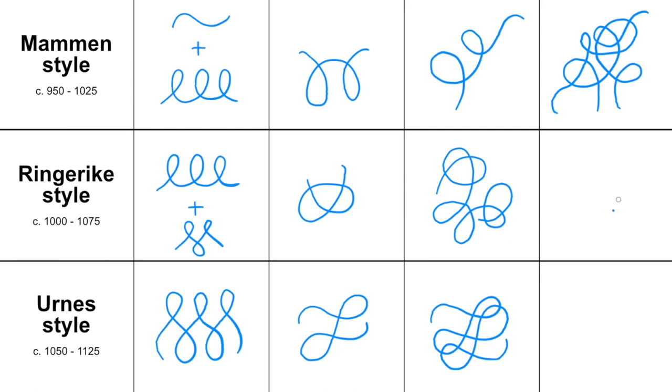And in the Ringerike style we have a little more controlled layout often consisting of some more controlled elements like a figure of 8 loop, with some more curly loop dominated elements intersecting.